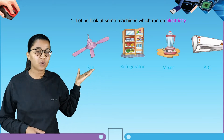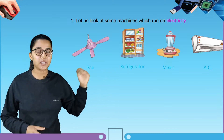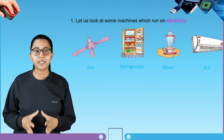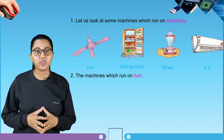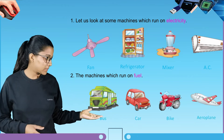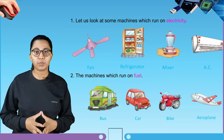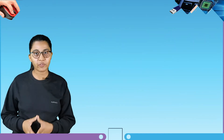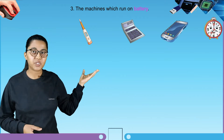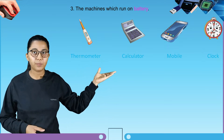Here you can see some pictures of machines that run on electricity: a fan, a refrigerator, a mixer, and an AC. Examples of machines that run on fuel include a bus, a car, a bike, and an airplane. Machines that run on battery include a thermometer, a calculator, a mobile, and a clock.